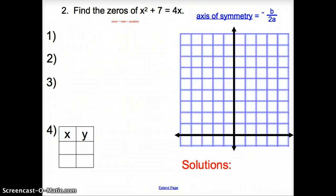Let's try one more. Now we are asked to find the zeros of x squared plus 7 equals 4x. Well, here, zeros are the same things as the roots, or the same thing as solutions. So zeros are roots, and roots are solutions. Roots are zeros. Zeros are solutions. So let's go ahead and find our zeros. Let's go ahead and find our solution.